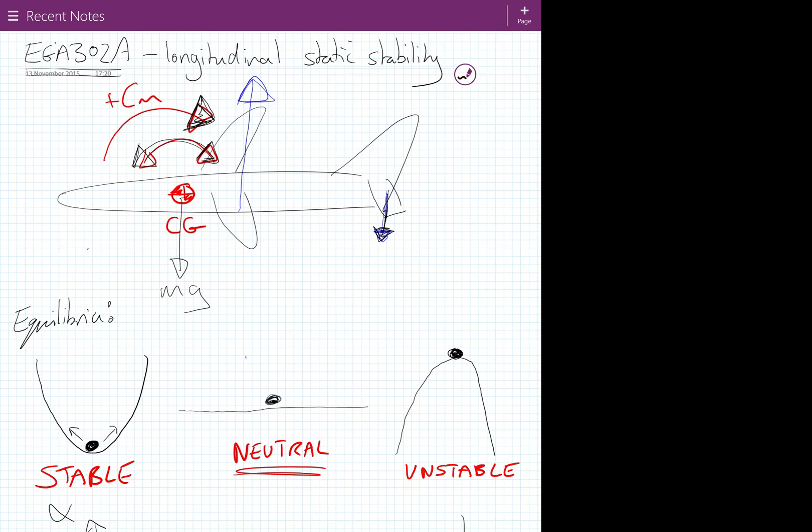On the other side, we have Cm against alpha, and it looks like this. Well, here, there may well again be an equilibrium position, an angle of attack at which Cm is equal to zero, so the aircraft is in equilibrium. But in this case, if you increase the angle of attack, you increase Cm, and that disturbance will tend to want to increase. So this is the unstable case.